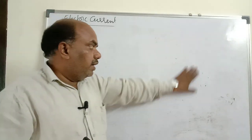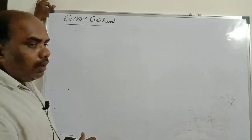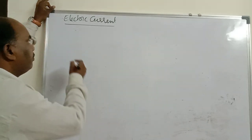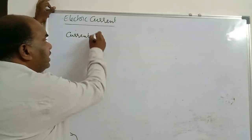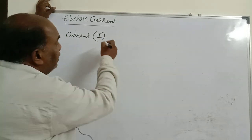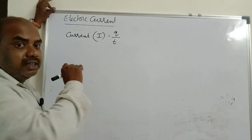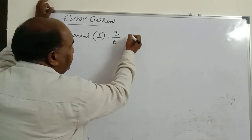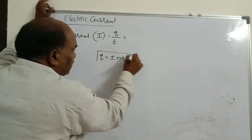Hello children, today we will see one important chapter: electric current. I'll teach you all basic concepts first, then we will go in depth. First of all, what is meant by current? Current is a physical quantity denoted by I. Current is nothing but the rate of flow of charge — charge divided by time is called current.